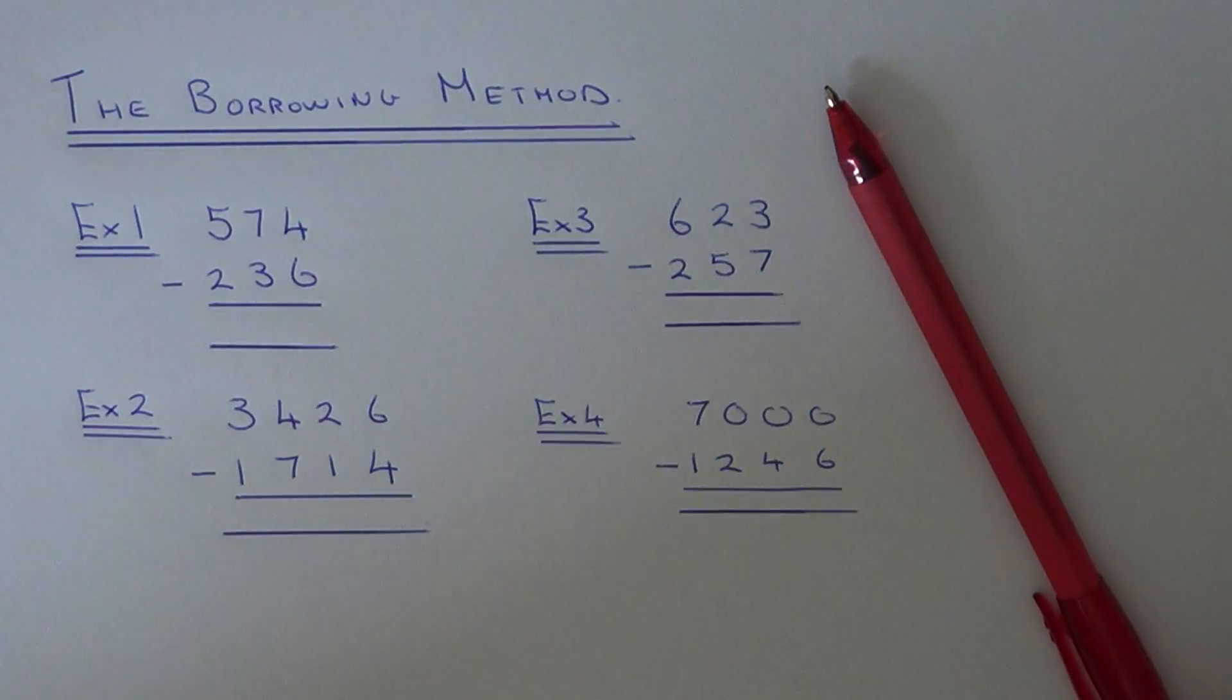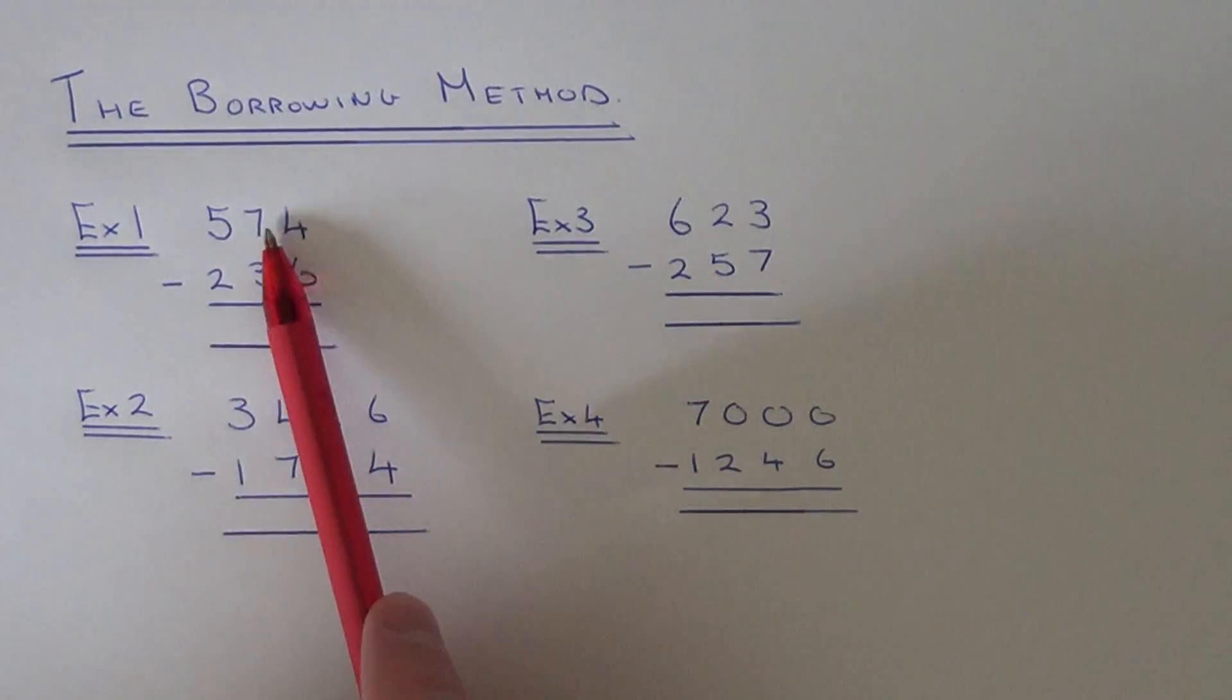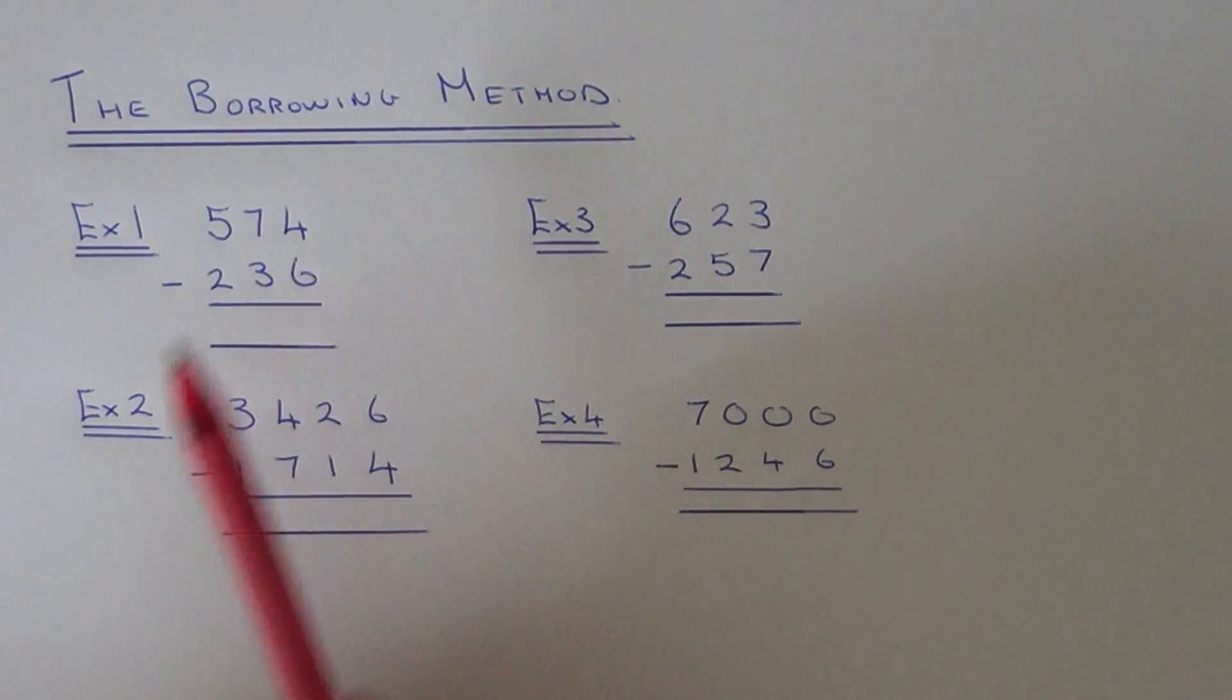Today I am going to show you how to carry out a subtraction using the borrowing method. First of all, you need to lay out the numbers so you have the biggest number on the top and the smaller number on the bottom.